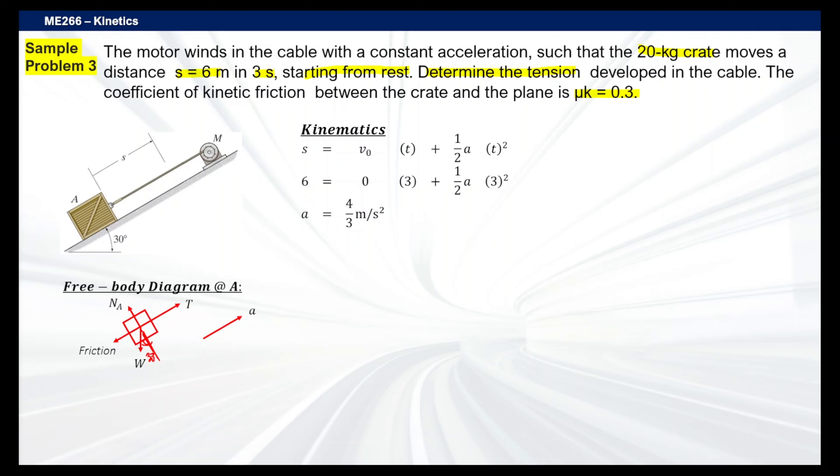And then from here, we can just simply substitute this to our equations of motion. So for summation of F sub Y equals mass times A sub Y, that will be our F of Y here—that will be N minus weight, or mass times acceleration due to gravity times cosine 30 degrees. There's no A Y here, so that's going to be zero acceleration on the Y axis. So you'll be able to solve the perpendicular force—that's going to be 169.86.